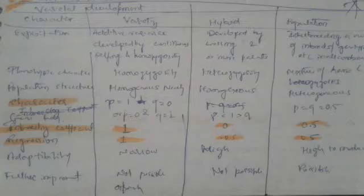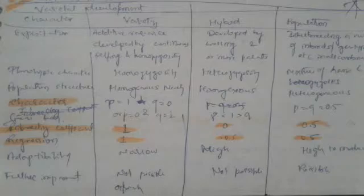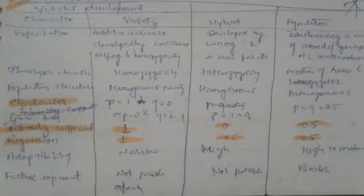Toh population ki baat karte hain — yahan integrating a number of inbreds aur genotypes in all possible combinations. Number of inbreds lete hain. Second character pe jaate hain, that is phenotypic character: variety homozygous hota hai, hybrid heterozygous hota hai, aur population hota hai mixture of homo and heterozygous. Third character hai population structure: variety hamesha homogeneous hota hai, hybrid heterogeneous lekin homogeneous hota hai — lekin heterozygous hota hai — aur population hamesha heterogeneous hota hai.